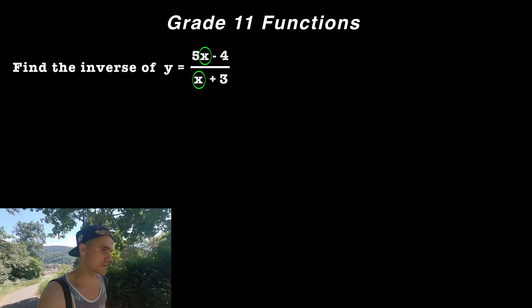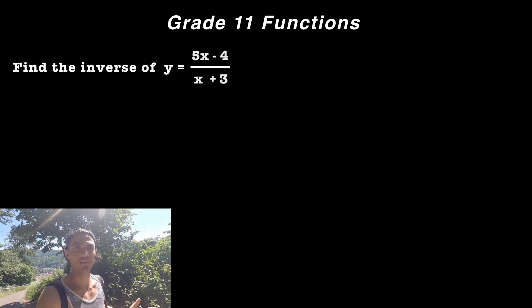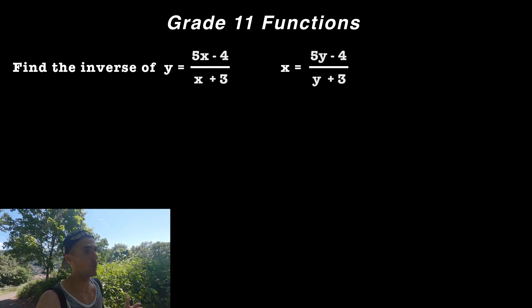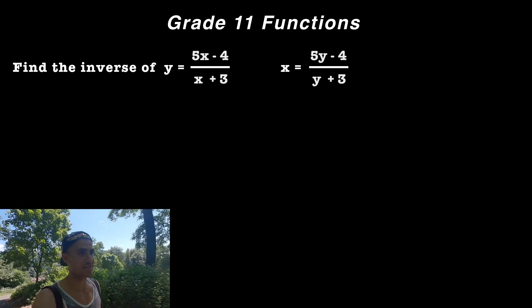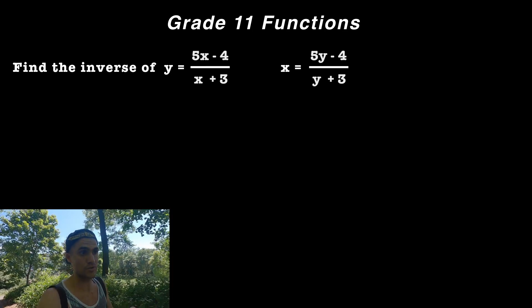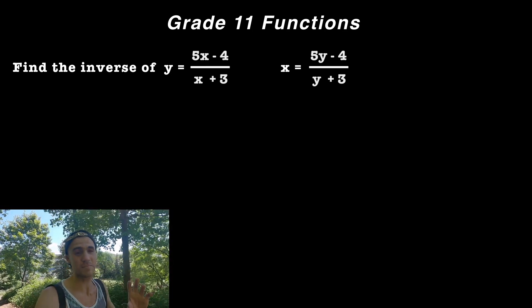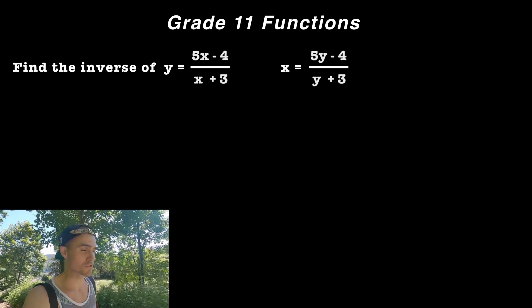On the right side here, and remember when we're finding the inverse, what we have to do is interchange the x and y values and now isolate for the two new y values on the right side. That's what makes it tough, is because we have to isolate for two new y values.